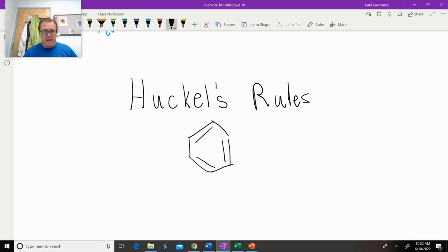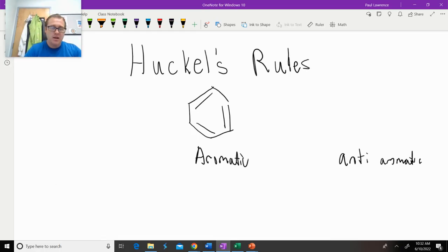There's going to be two classes of molecules that we need to be aware of. There's going to be aromatic compounds, and there's going to be anti-aromatic. Spoiler alert, benzene is an aromatic compound.